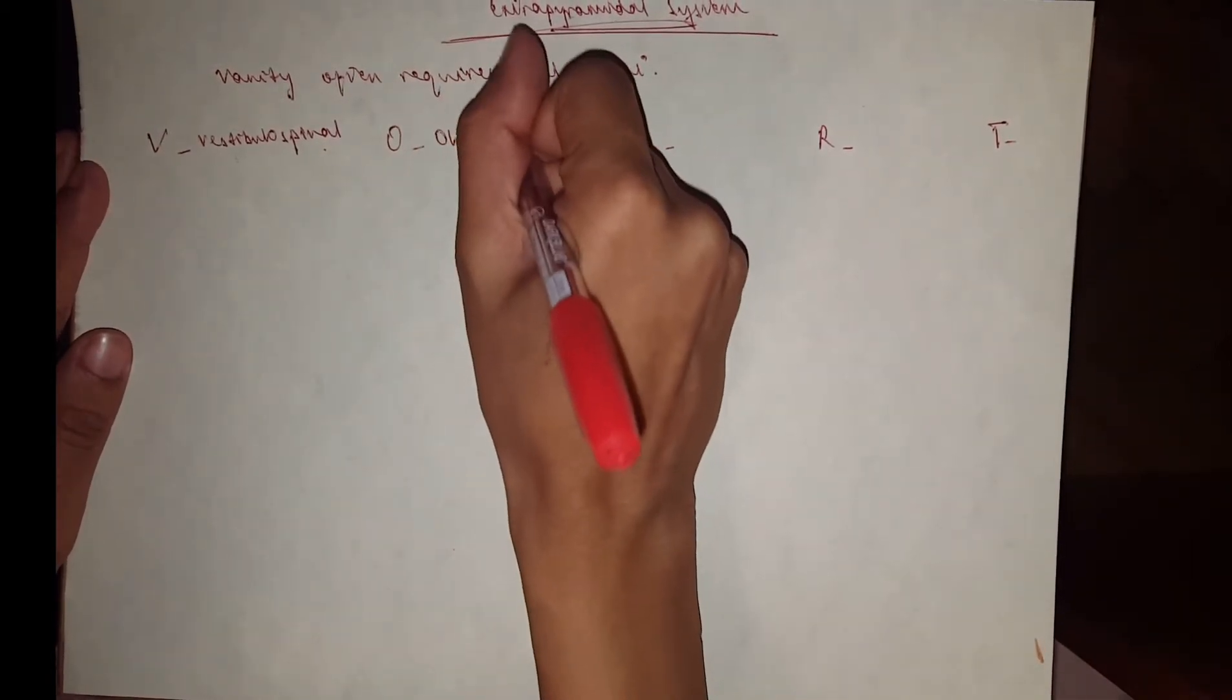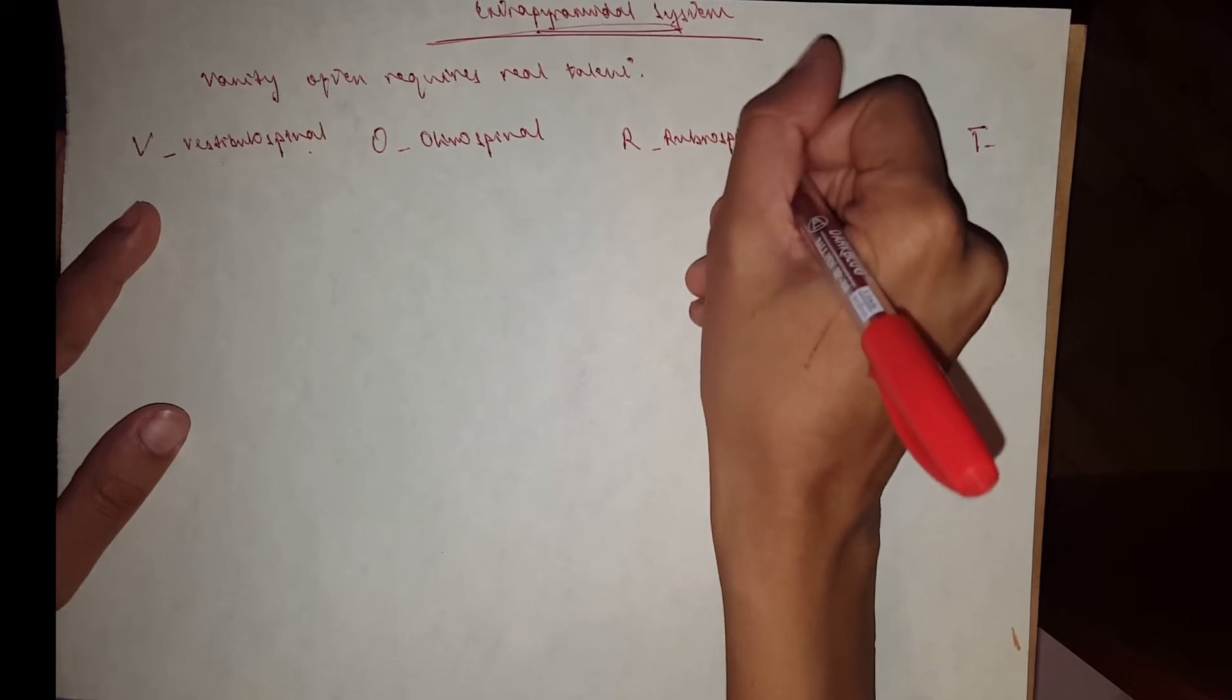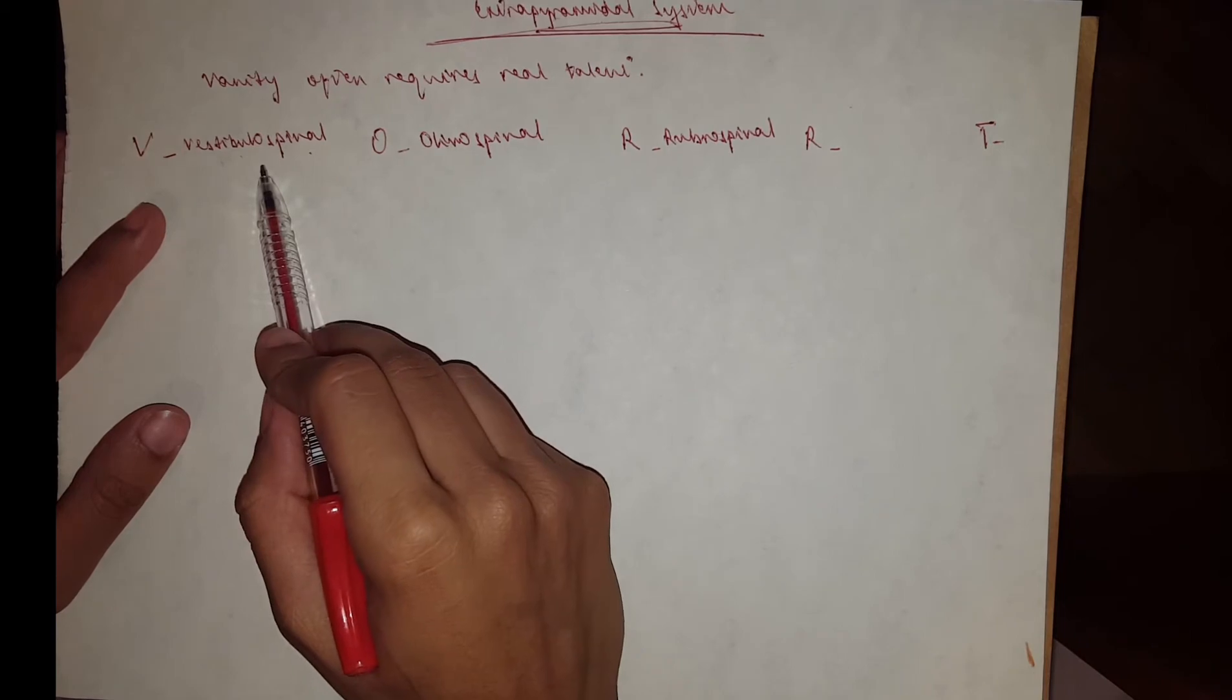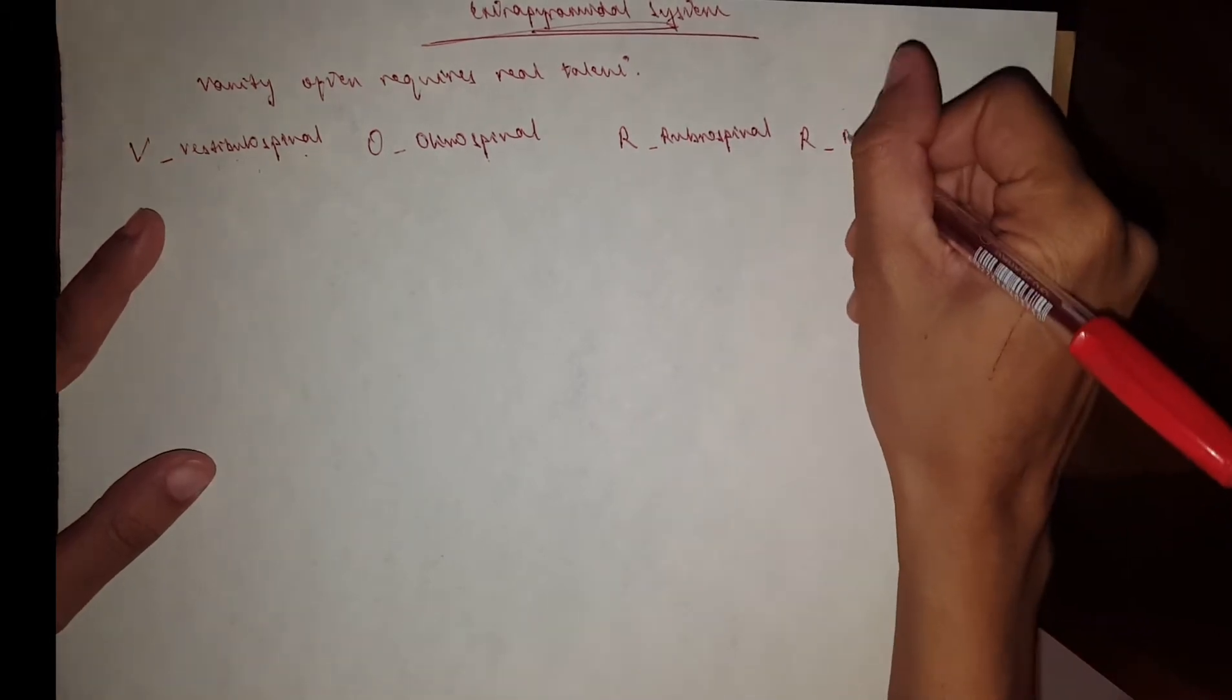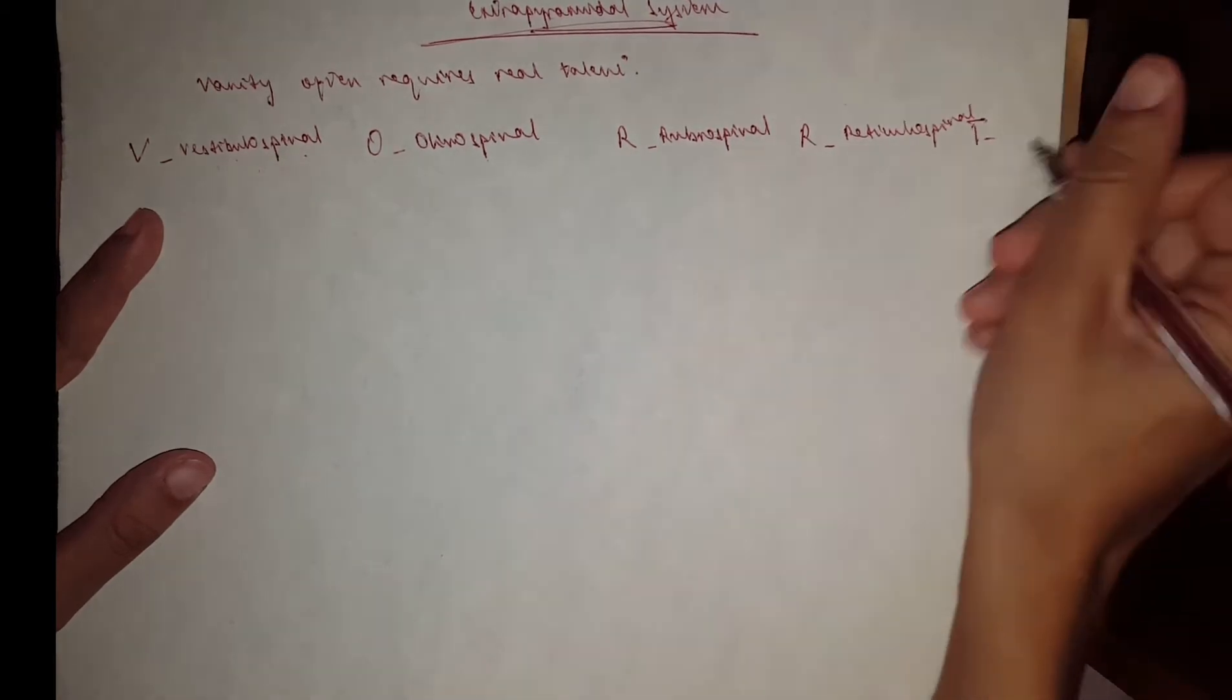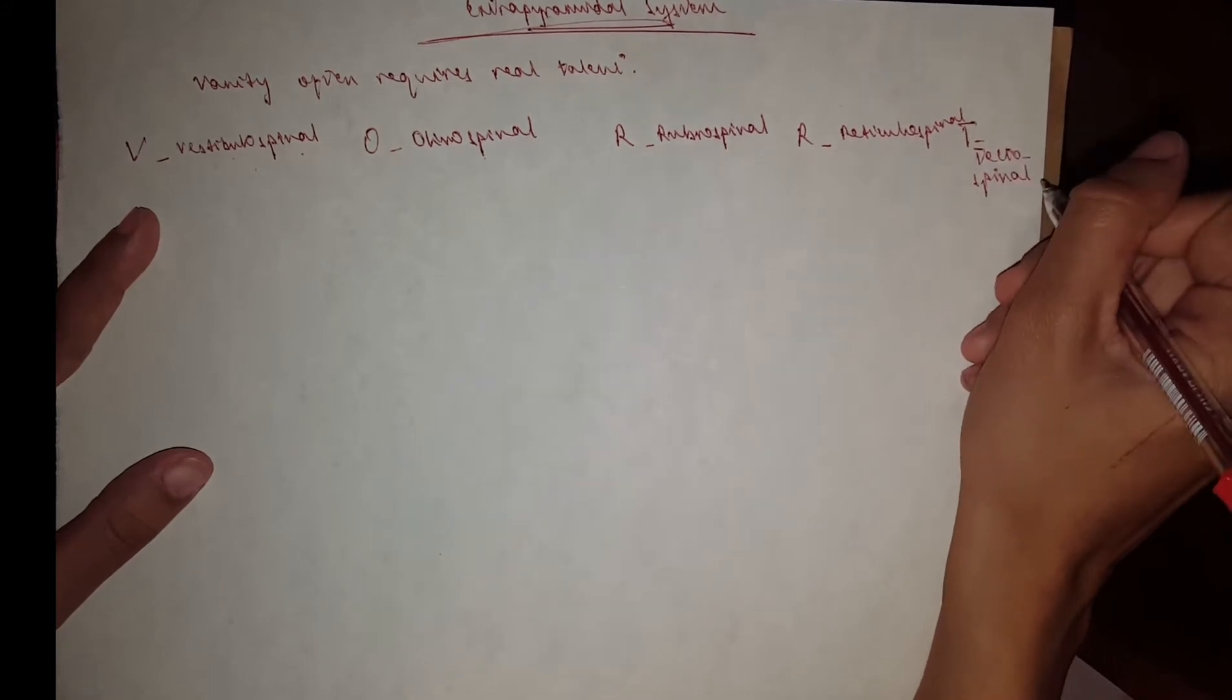The names tell you where they come from. You've got the rubrospinal tract from the red nucleus, the vestibular nuclei and cerebellum. The olivospinal is from the inferior olivary nucleus. You have the reticulospinal tract from the reticular formation, and for T you have the tectospinal tract which comes from the tectum.